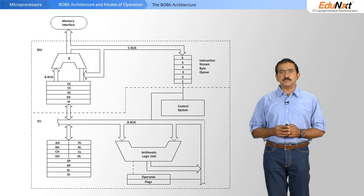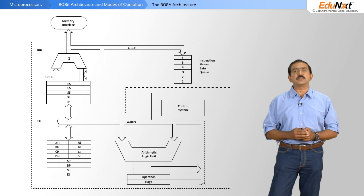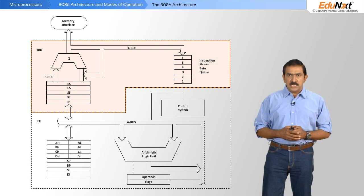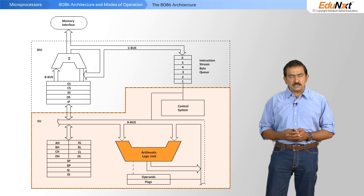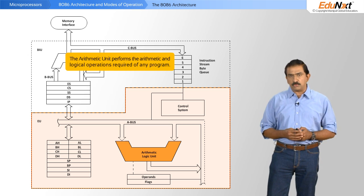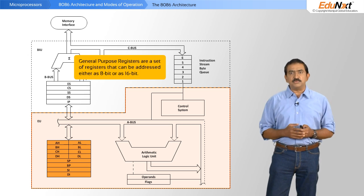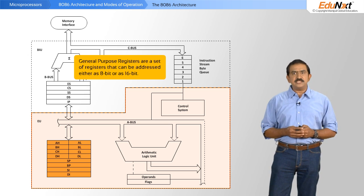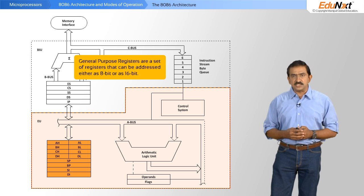Let us now look at the insides of this processor. There are two major chunks — two groups of functions that this processor performs. One is called the execution unit and the other is called the bus interface unit. The execution unit executes everything for the processor. It consists of the arithmetic logic unit, which performs arithmetic and logical operations, and a set of general purpose registers including the accumulator. The registers can be addressed either as an 8-bit register or as a 16-bit register.